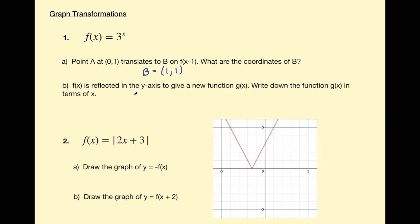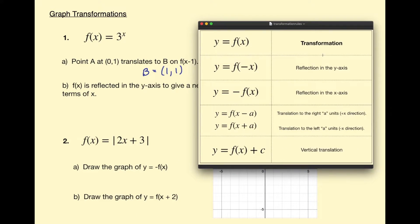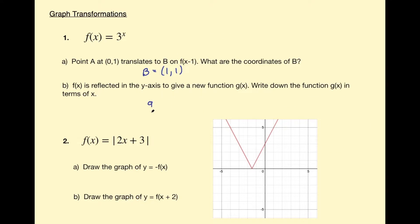Now part B says f of x is reflected in the y-axis to give a new function g of x. Write down the function g of x in terms of x. We can use our rules again. A reflection in the y-axis gives us f of negative x. So if f of x is 3 to the power x, the input is now negative, meaning our new function g of x equals 3 to the power of negative x.